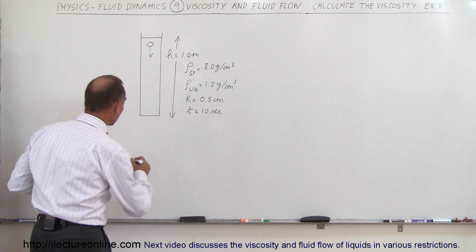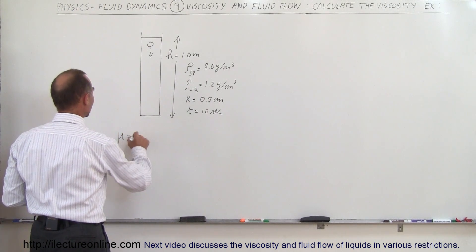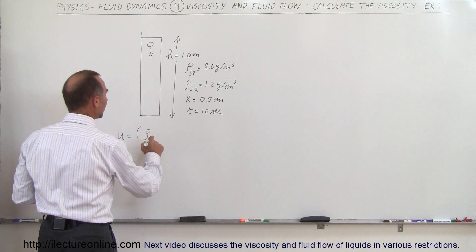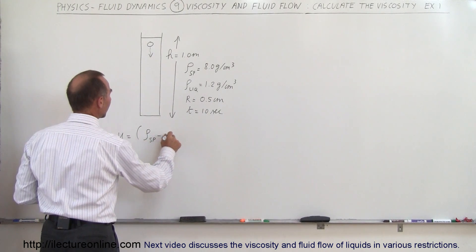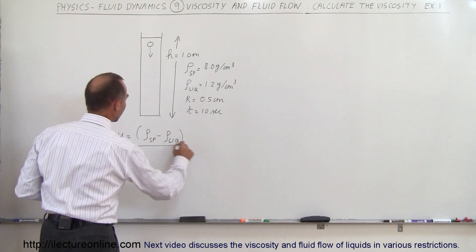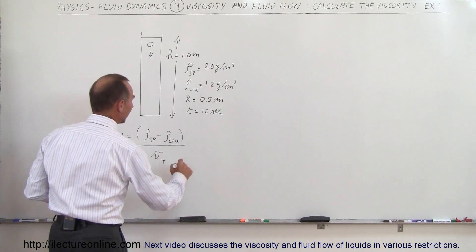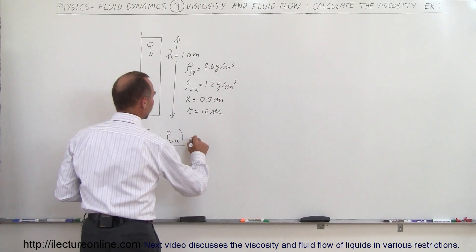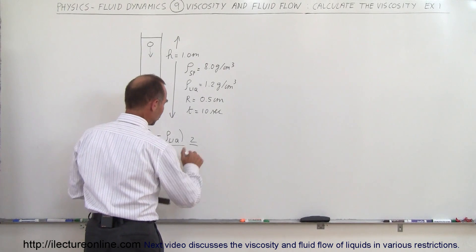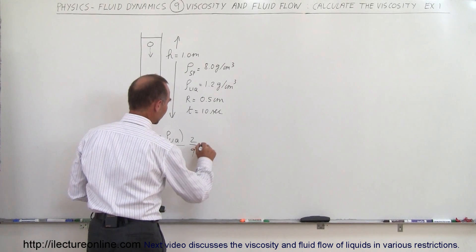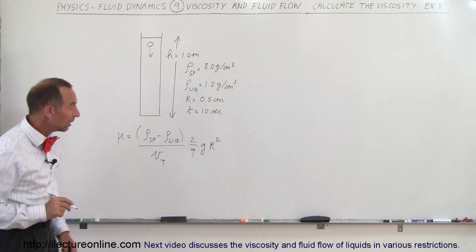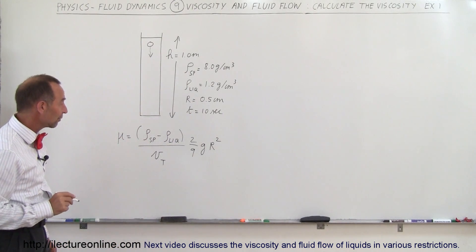Alright, the equation says that the viscosity is equal to the difference of the density of the sphere minus the density of the liquid, divided by the terminal velocity, times 2/9 the acceleration of gravity times the radius squared. So that was the equation we found in the previous video.